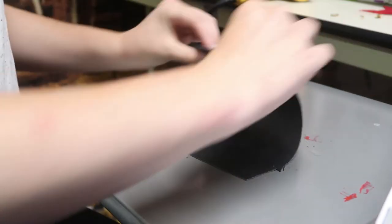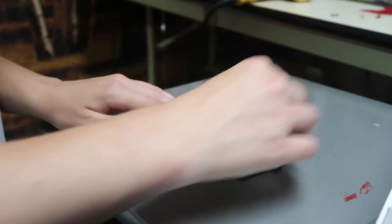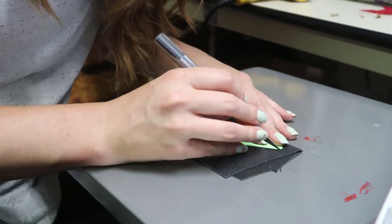Then I heated up some Worbla, folded it over to make two layers, and laid my pattern on it. Then I cut it out using an exacto knife.